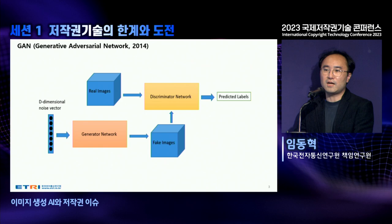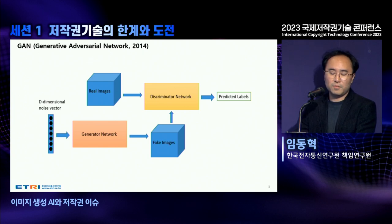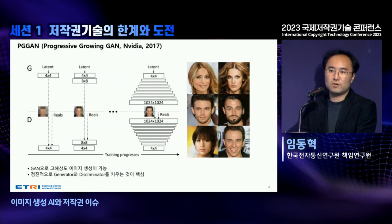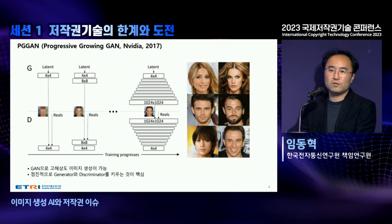When GAN appeared, people were very surprised about the quality. But GAN had weaknesses — it was not able to generate high-resolution images. We continued studying GAN, and three years later, in 2017, NVIDIA came up with PGGAN.